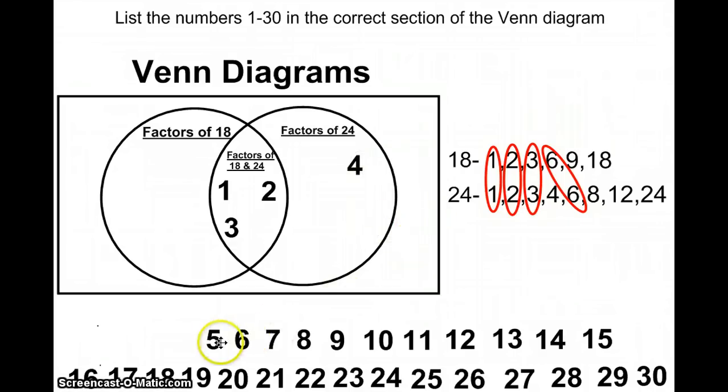Now if I look at 5, 5 does not appear in either list. So this number goes outside of the Venn diagram because it doesn't satisfy condition A and it doesn't satisfy condition B. So any number that is like 5 would be outside of your Venn diagram.